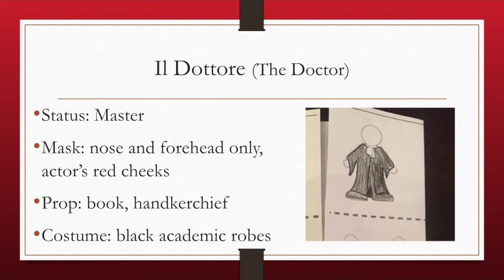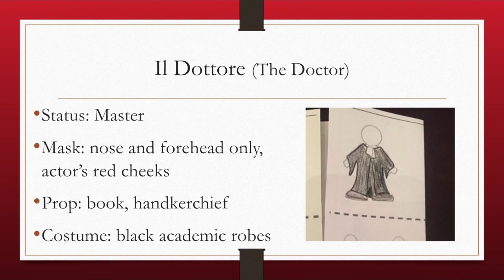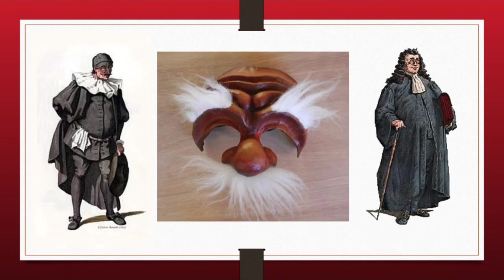The next master is Il Dottore, or the Doctor. The Dottore doesn't necessarily have to be an actual doctor — they just had to be supposedly a learned person, even though they probably weren't. They usually pretended to know a lot but really didn't know what they were talking about. Their mask covered only the nose and forehead so the actor's cheeks could be really red. The prop was either a book or a handkerchief, and the costume was academic robes — like those worn at graduation by doctors, professors, or lawyers — always projecting that he's really smart.